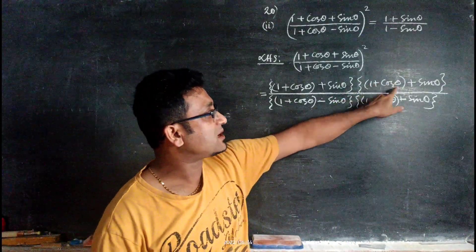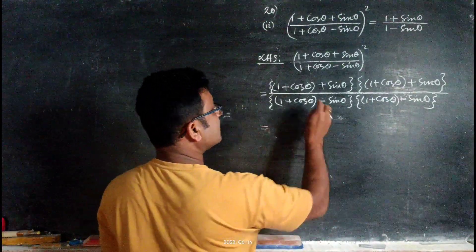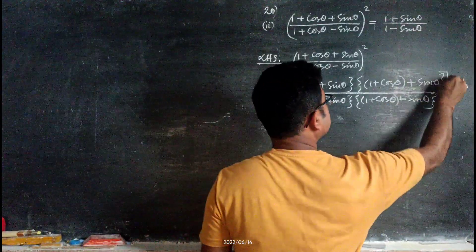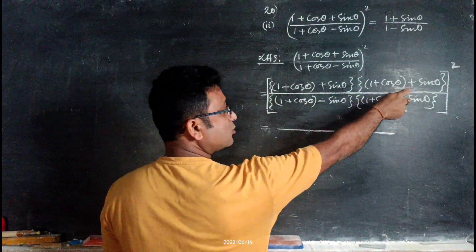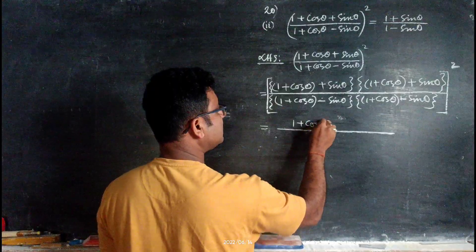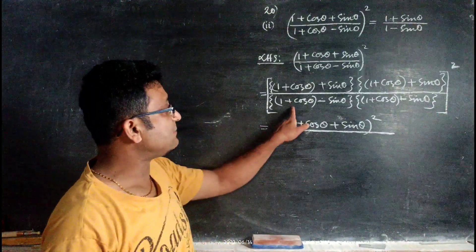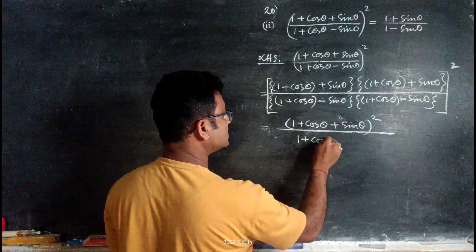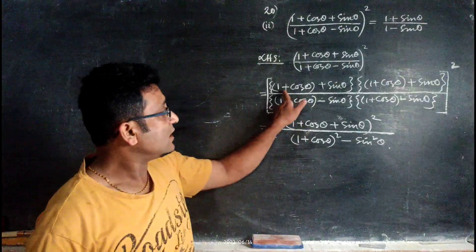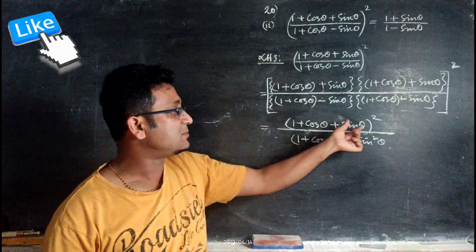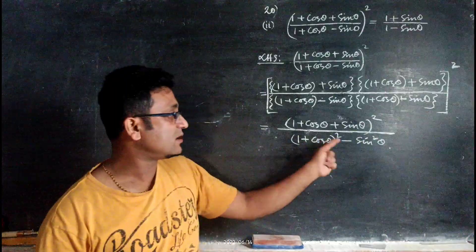In the numerator we have multiplied by 1 + cosθ + sinθ, and since there is a square outside the bracket, in the numerator it will be (1 + cosθ + sinθ)². In the denominator, it is (a+b)(a-b), which gives a² - b².